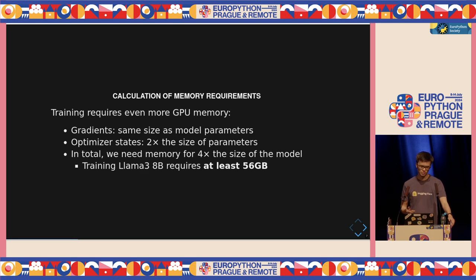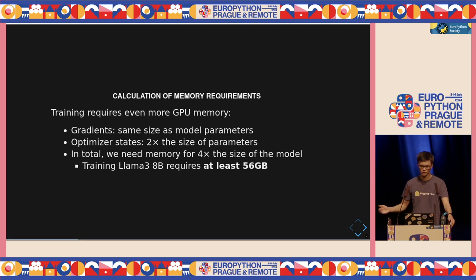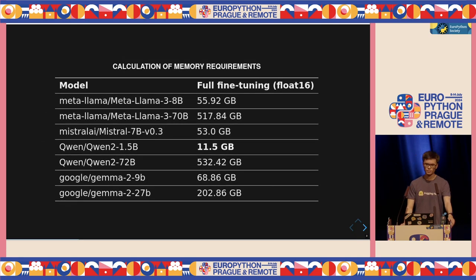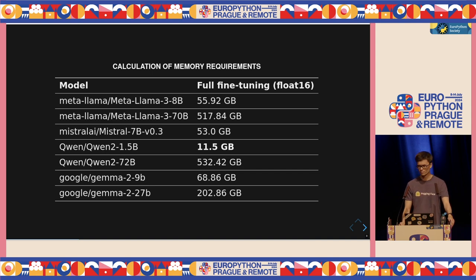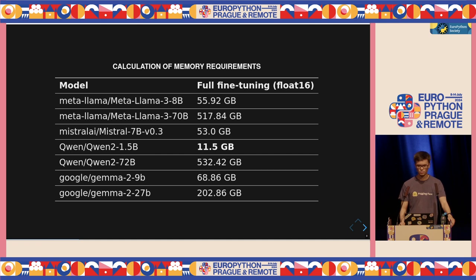On top of that, we also need more memory for activations, which are fairly difficult to calculate, but know that we have to add even more memory on top. I then checked a few of the more popular models on the Hugging Face Hub to see what I can train on my machine. Assuming we load them in float16 precision, we have models from Meta, Mistral, Qwen, and Google Gemma. As you can see, they are all quite big, and the only one I can reasonably train on my machine would be the 1.5B parameter model from Qwen — which might not be enough for my use case.